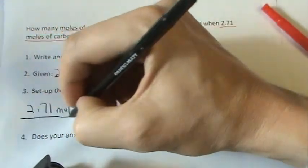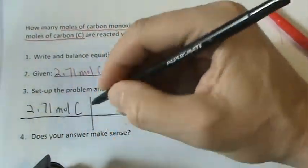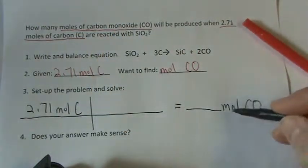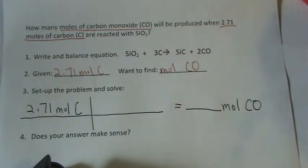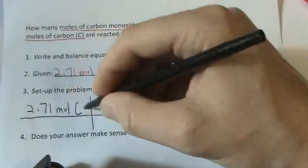Well, what we need to do is set it up so we can cancel out moles of carbon and end up with moles of carbon monoxide. And what we're going to use is what's called the mole ratio from the balanced equation. So I know I need to cancel this out, moles carbon on the bottom.